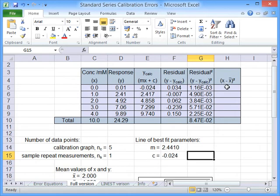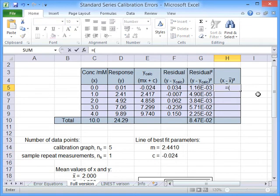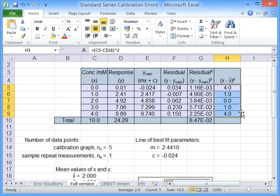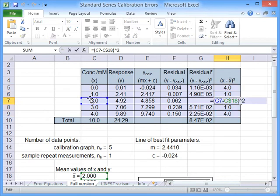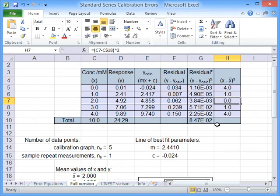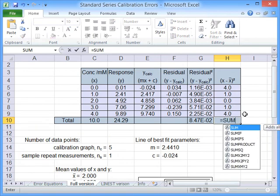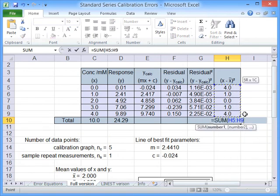Then the next column that we see is X minus X mean squared. So here we have to take the X value minus the mean value that I've already got in there to the power of 2. And again, if we use a dollar sign, we can just copy this down. And each time we're taking the particular X value for that line minus the mean and squaring it. And again, we need the total for that column in a moment.